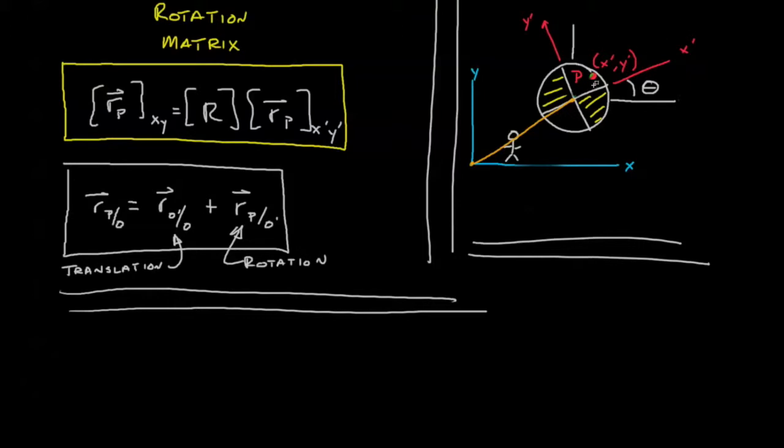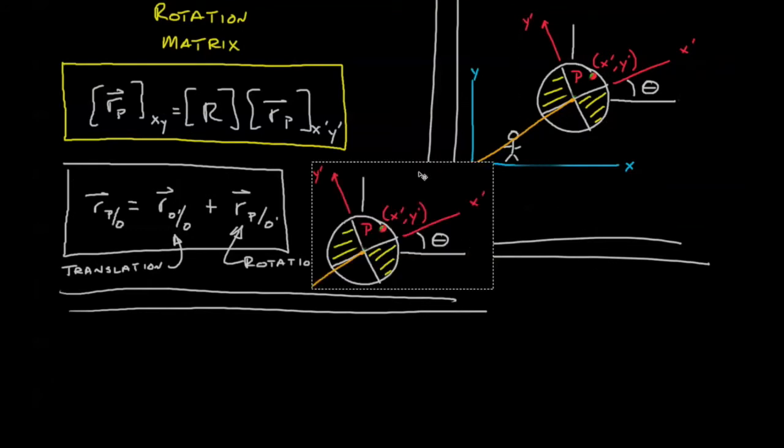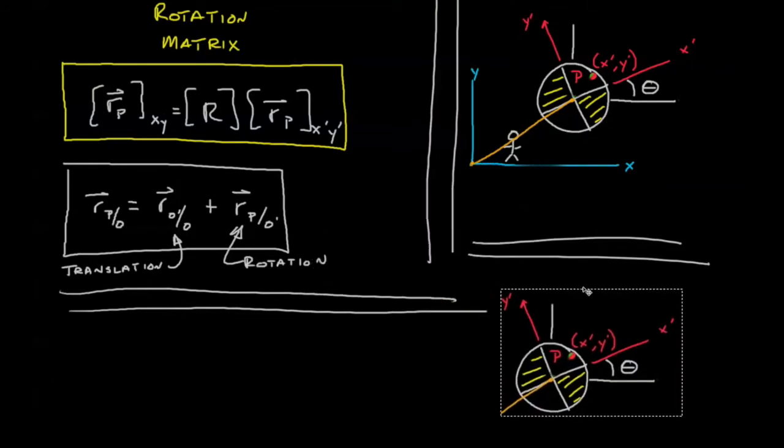I'd like to revisit our previous problem of the merry-go-round. Let's copy this and paste it down here. We're going to erase this orange line and fill in the circle. But this time around, we're going to give the merry-go-round some angular velocity. And I'd like to know,